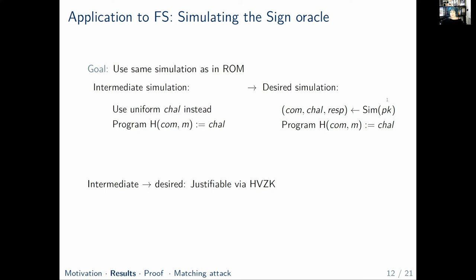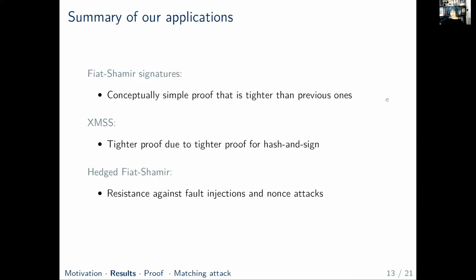As we can see, this proof step for Fiat-Shamir was as simple and straightforward as in the random oracle model. Our work contains a proof for Fiat-Shamir signatures that is conceptually simple and also tighter than previously known results.